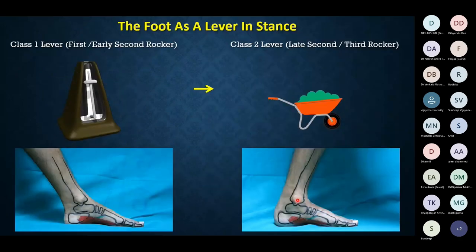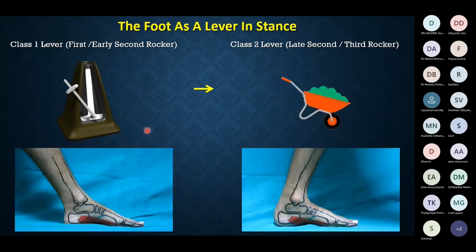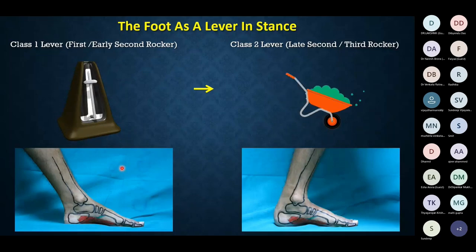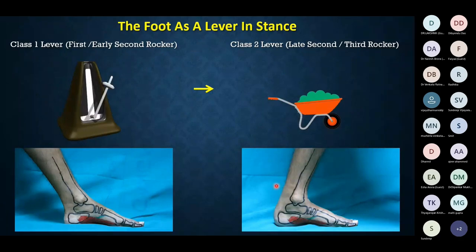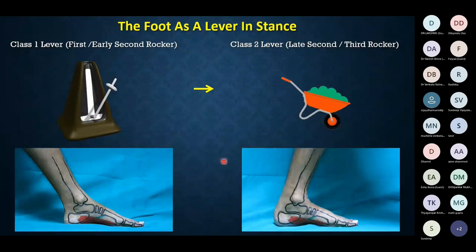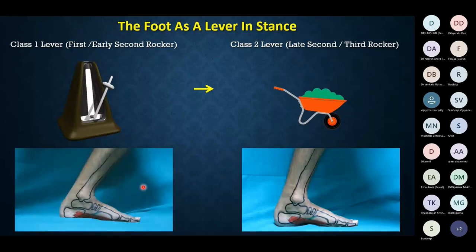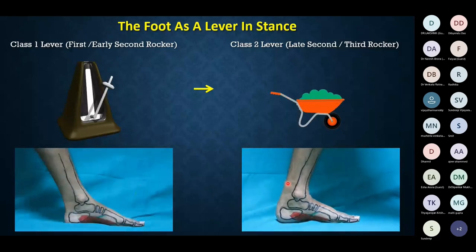To summarize the connection between lever systems and the foot: the foot moves from being a class one lever — in closed chain position when the foot is on the ground and the tibia is free, like a metronome — to a class two lever at the end of stance. During stance, the foot keeps alternating between a class one lever and a class two lever.